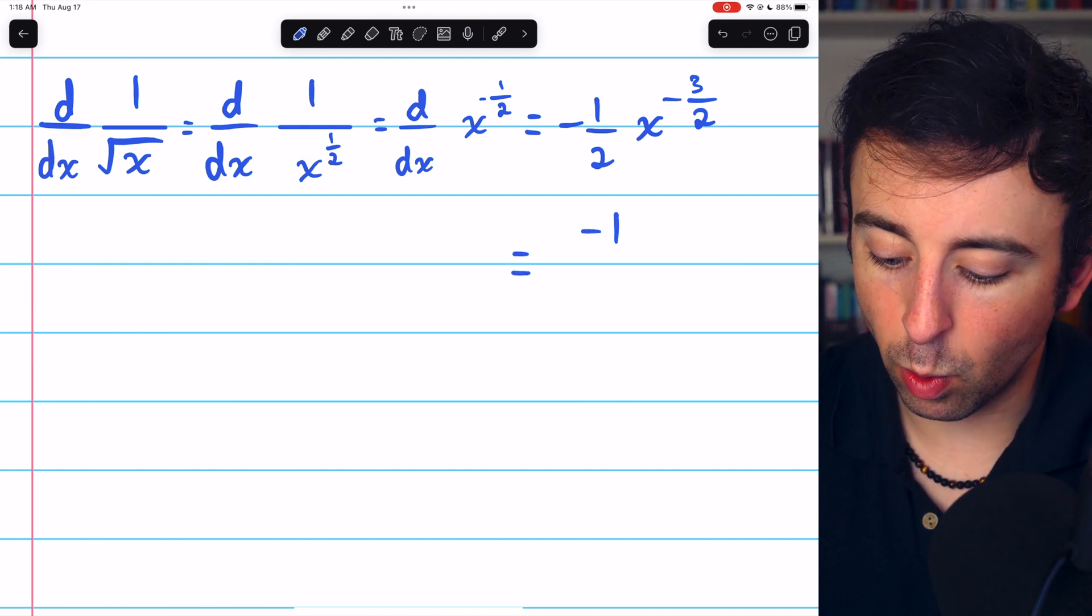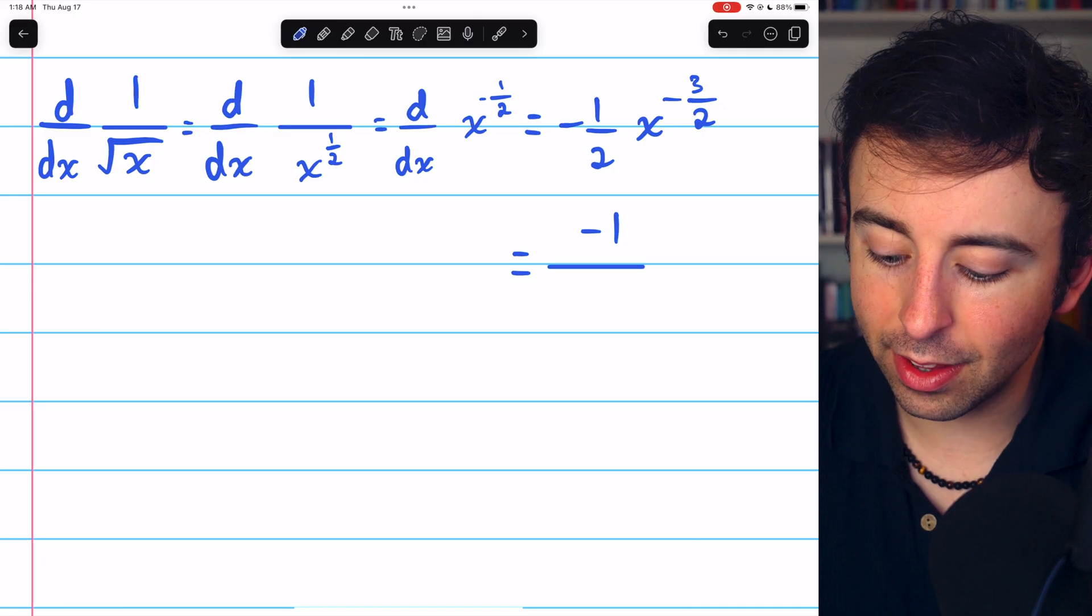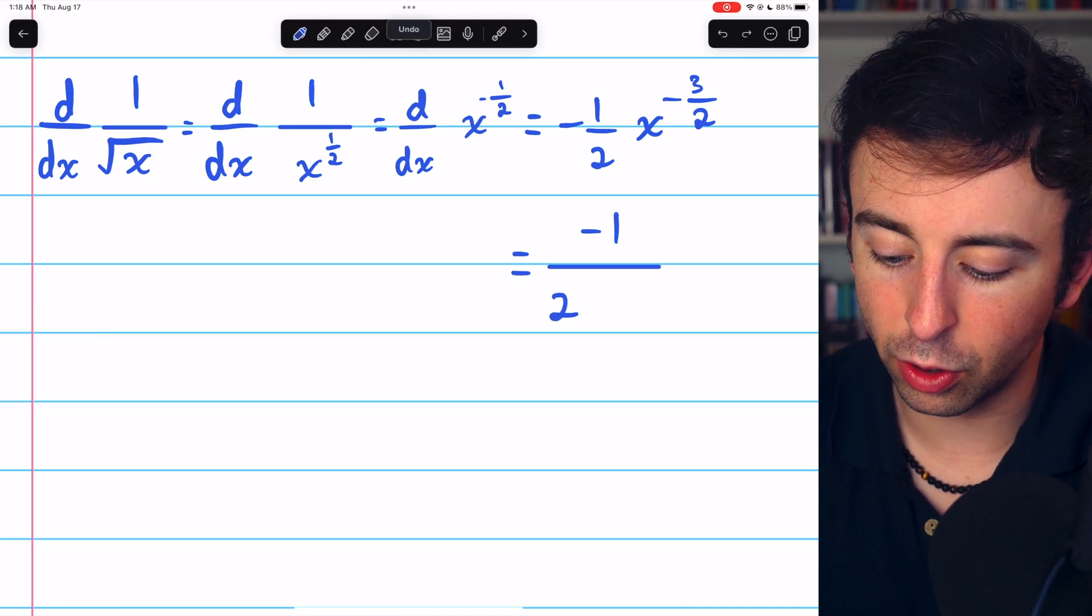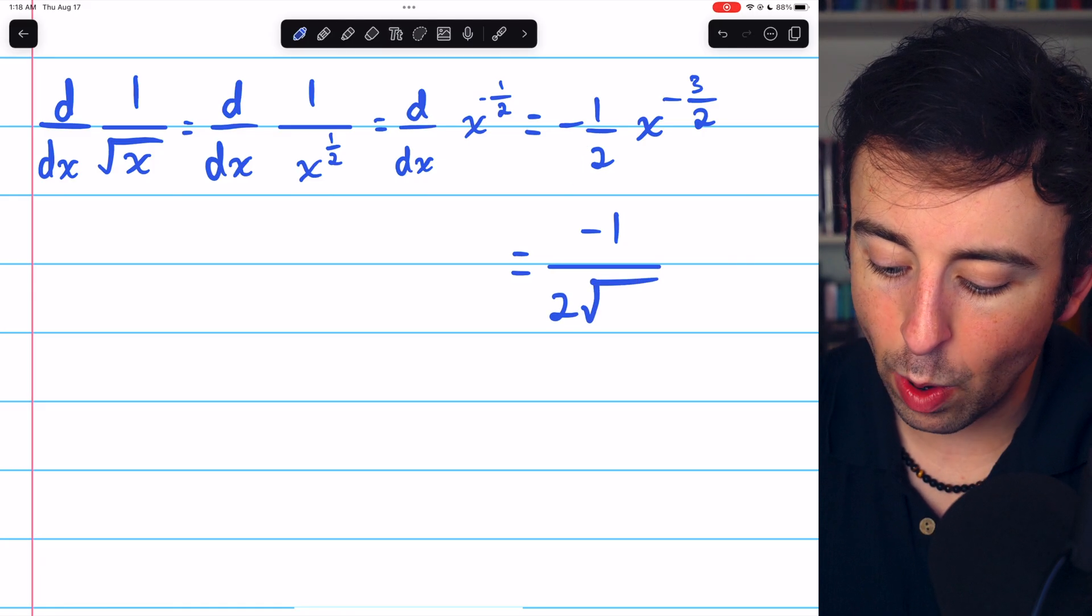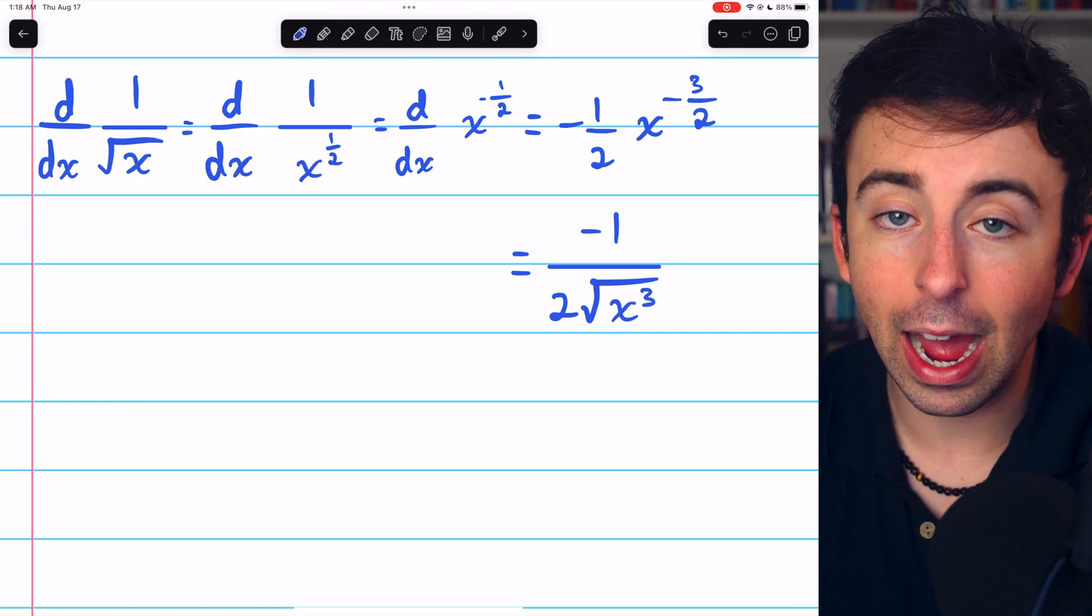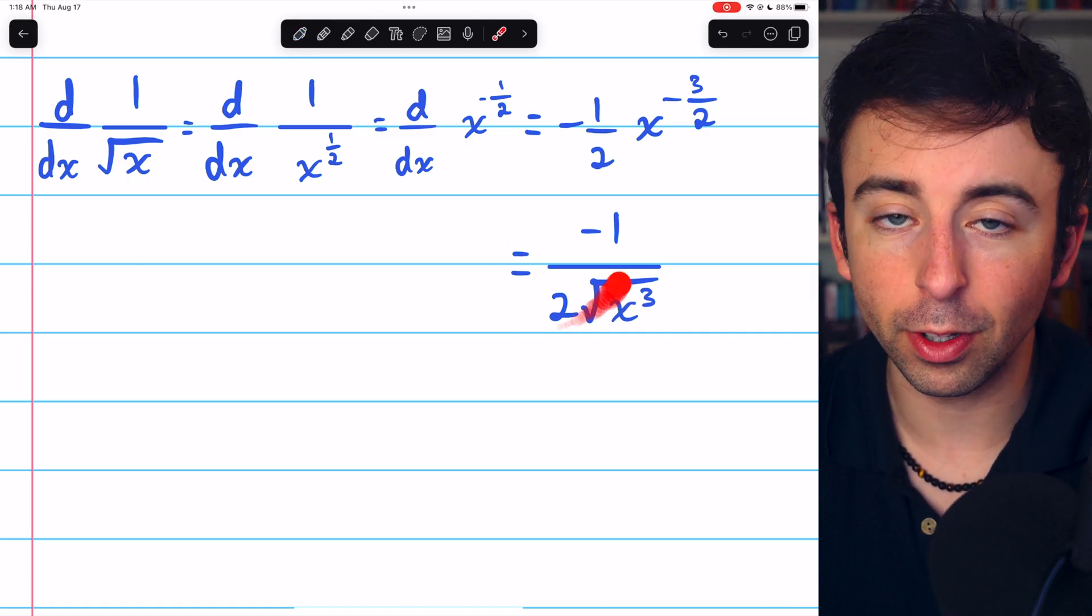we can leave the negative 1 in the numerator, and then in the denominator, we'll have the factor of 2, and then we'll have the square root of x to the power of 3. And you may prefer the look of that.